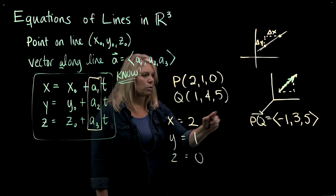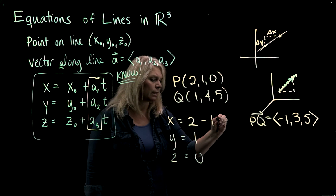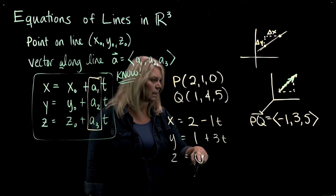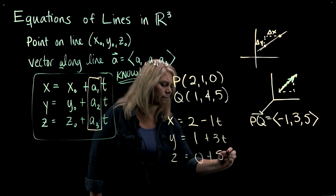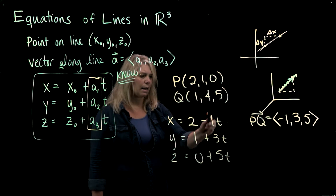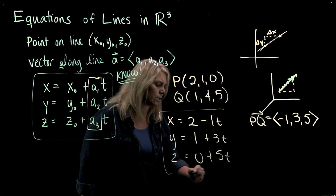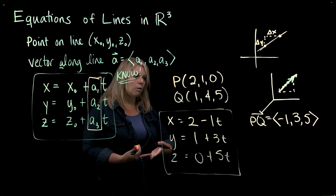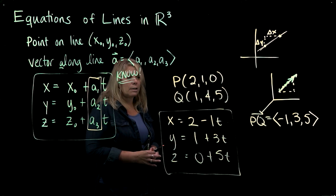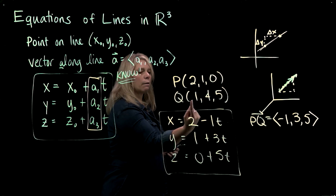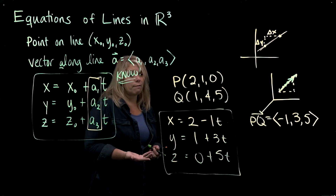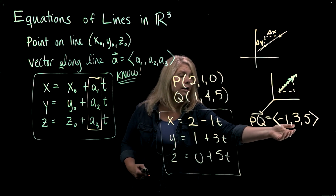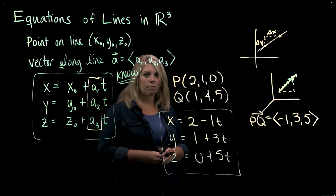So the parametric equations are: x = 2 − t, y = 1 + 3t, and z = 5t. This gives a line that starts at point P when t = 0 and goes toward point Q. If I wanted the line to go the opposite direction, I could use (1, 4, 5) as my initial point and use vector QP = (1, −3, −5).